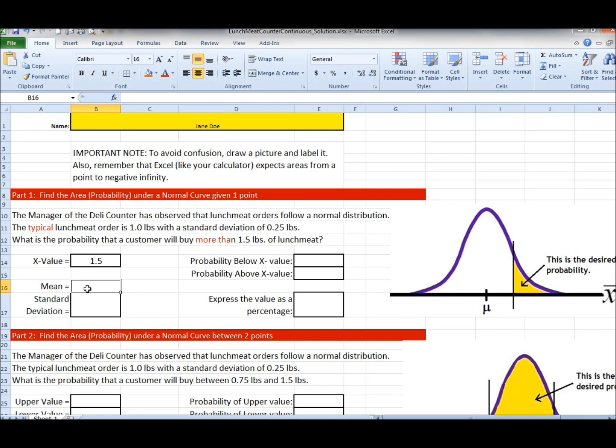What is the mean? Well the mean is what is typical on average, right? So typically it says the lunch meat order is one pound. They tell us in the problem the standard deviation is 0.25.